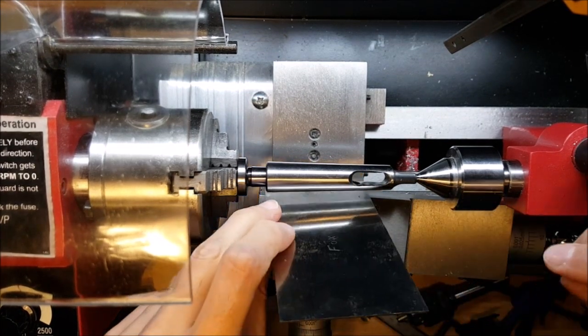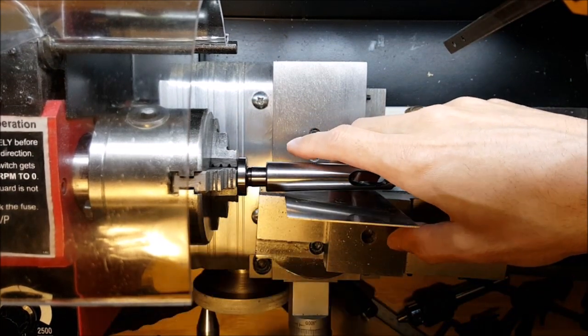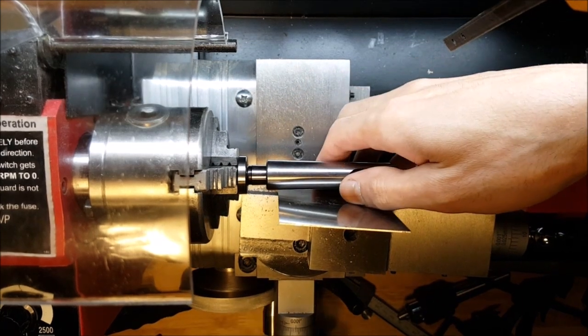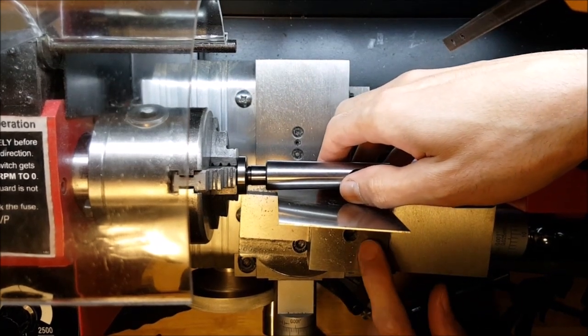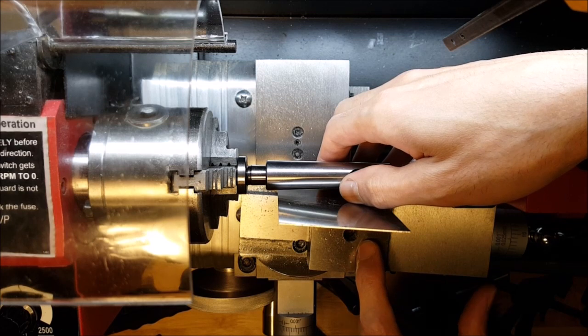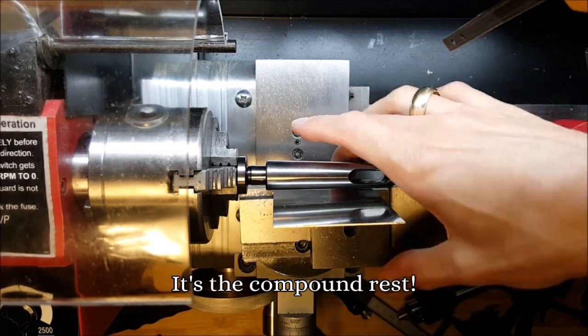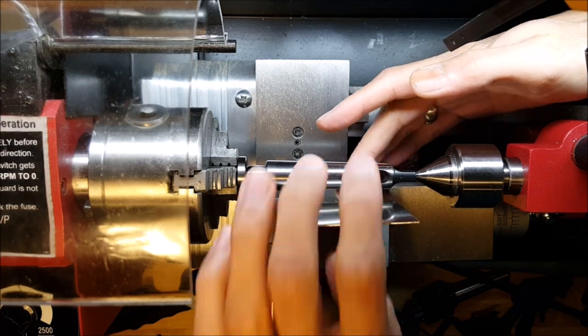Now we take a flat piece of metal, in this case it's a scraper, set it against this thing I forgot the name, and then you just match the angle here.